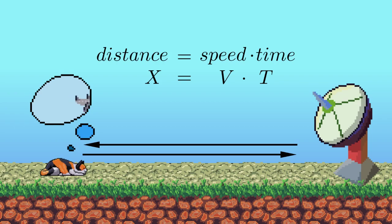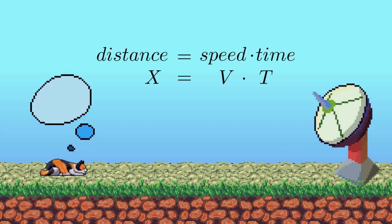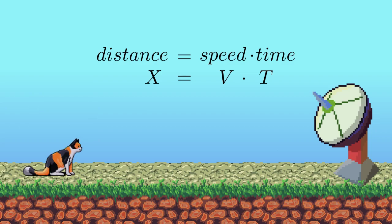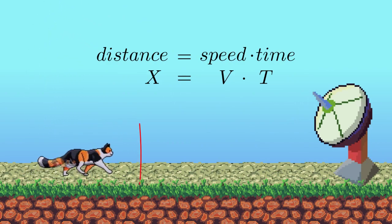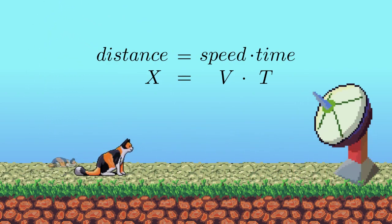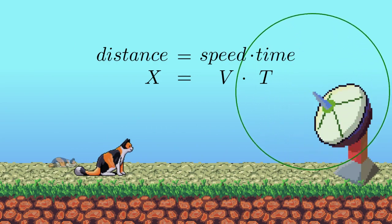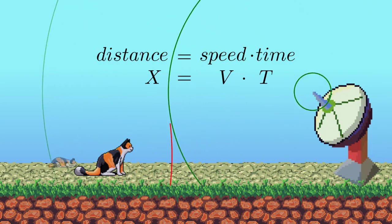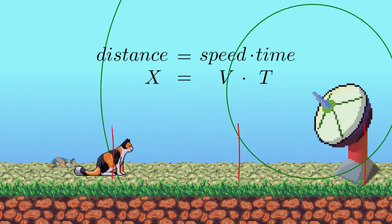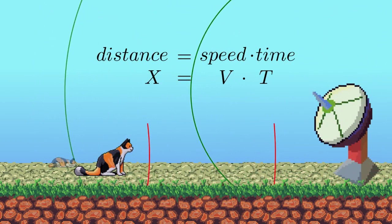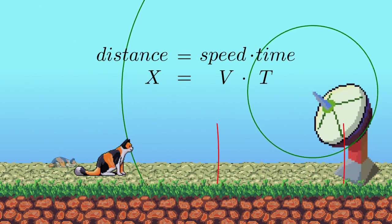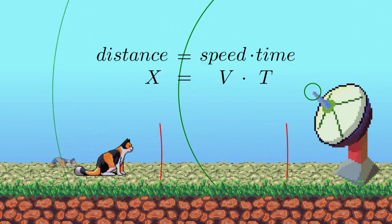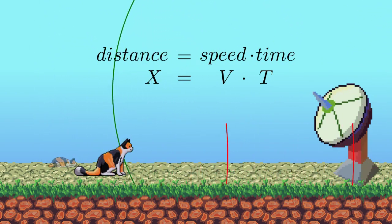This is all very simple. However, as we all know, planes don't like to sit still. So if we only send one wave, then by the time the wave returns, the plane can be at a different place. Therefore, instead of sending a single wave, we would like to send as many waves as possible. The higher the frequency — namely the more waves we send per second — the more updates we will get. But this request for more updates leads us to an interesting problem.